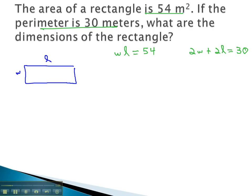My suggestion to solve these is to solve the perimeter equation for a variable. Let's solve it for w, starting by subtracting 2l from both sides. This gives us 2w = 30 - 2l. Dividing every term by 2 gives us w = 15 - l.